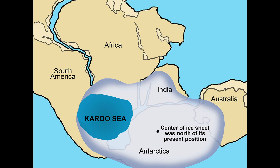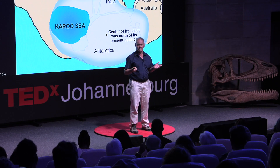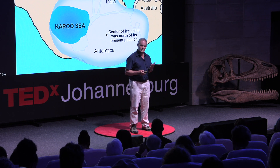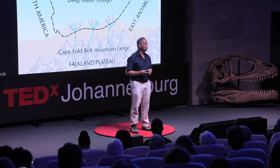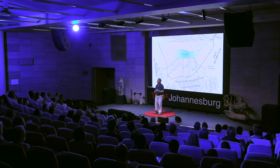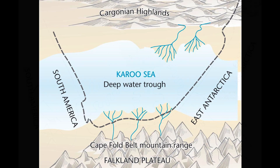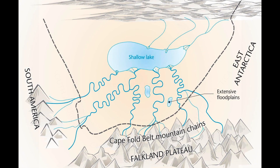300 million years ago, southern Africa was situated over the polar region, meaning the landscape was one of ice caps and glaciers. With time, as our continent moved northwards through plate tectonics, the Karoo sea began to thaw out — the icebergs melted — and we got sediment being deposited in this sea from a high mountain range situated off the southern coast of South Africa.